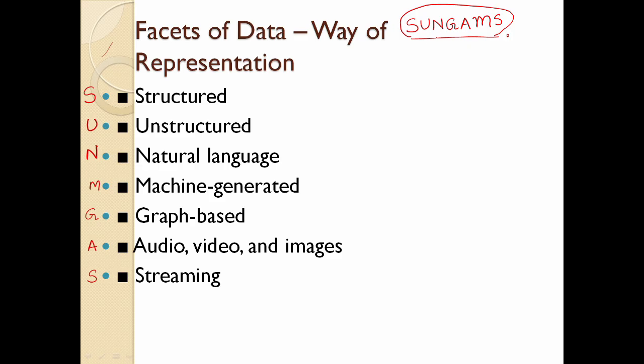N is Natural Language, G is Graph-based, A is Audio, Video, Images, M is Machine Generated, and S is Streaming.